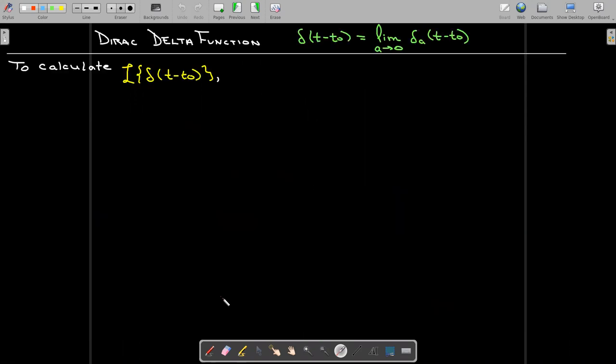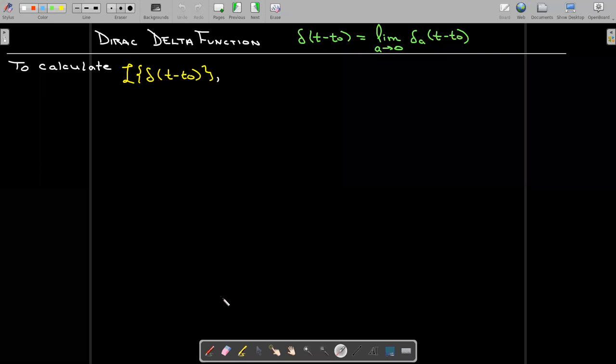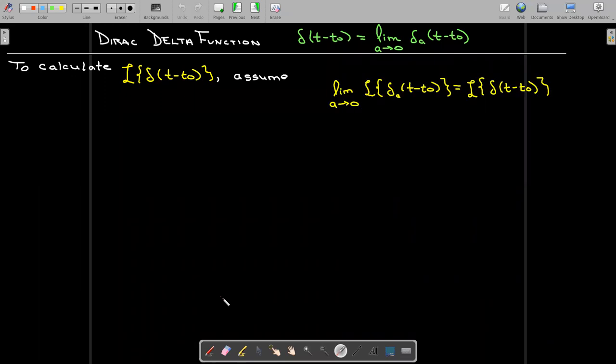So let's calculate the Laplace transform of this strange object that we call the Dirac delta function. And the way we're going to do that is we're just going to assume this is a fact that the limit as a goes to zero of the Laplace transform of our unit impulse function centered at t-naught, the delta sub a of t minus t-naught, is going to be the Laplace transform of the Dirac delta function centered at the same value.